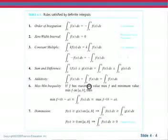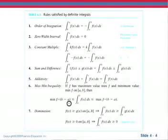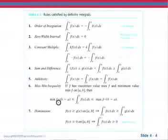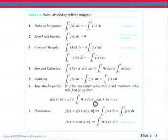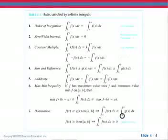If we add an integral from a to b to an integral from b to c of the same function, that's the same as the integral from a to c. There's also a maximum-minimum inequality: if we take the smallest value of f times the width of the interval, this makes a rectangle, and a rectangle with the largest value, and the integrals will be somewhere in between those two. If f of x is greater than or equal to g of x on the interval, then the integral from a to b of f of x dx is going to be greater than or equal to the integral from a to b of g of x dx.